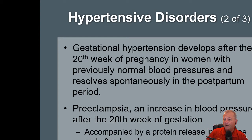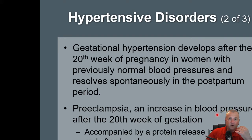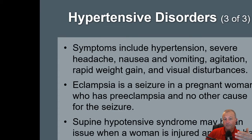Then we talk about gestational hypertension, which is important around the 20th week of pregnancy. We worry about this because of preeclampsia. What separates preeclampsia from eclampsia is going to be the development of seizures — if seizures occur, the patient has become eclamptic. Preeclampsia is accompanied by protein released in the urine, swelling — what I like to call flash swelling — sudden onset of weight gain, headache, nausea, and vomiting.